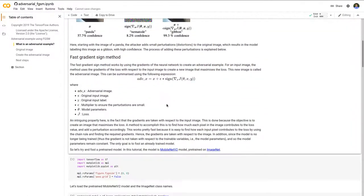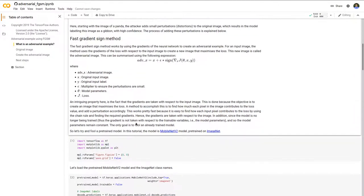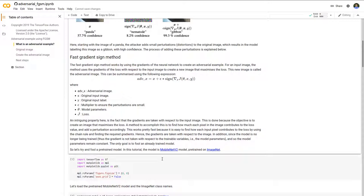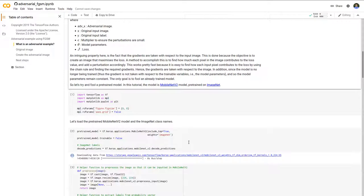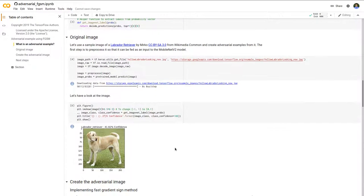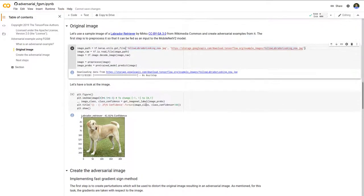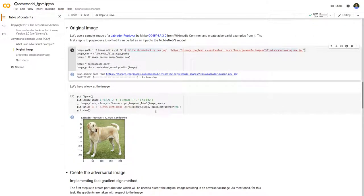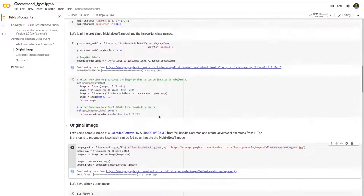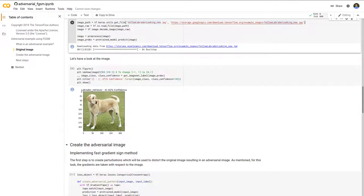If we look at the code here—talk is cheap, show me the code—pretty much what they're doing is using a pre-trained model, the MobileNet v2 model which is pre-trained on ImageNet. ImageNet is obviously the very famous dataset on image classification. In this case they take a picture of a yellow Labrador Retriever, and if you put it through this pre-trained MobileNet it will correctly classify it as a Labrador Retriever with 42 percent confidence.